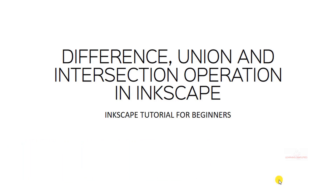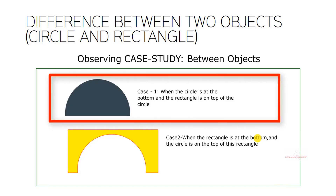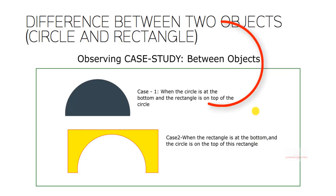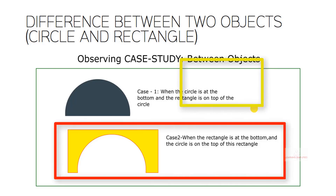Now in the first case, we will be observing some case studies between objects. What happens when the difference operation is applied within two objects? In case one, we will be practically using two different objects: the circle and the rectangle. Case one is when the circle is at the bottom and the rectangle is on top of the circle, and there will be a case two when the reverse happens — the rectangle is at the bottom and the circle is on top of the rectangle.